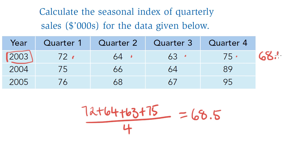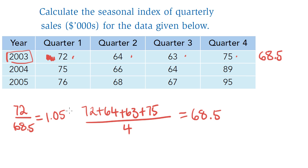Now I'm going to work out each sales figure as a proportion of the yearly average. So 72 divided by 68.5 — because 72 is greater than 68.5, these sales in quarter one were better than average, so my number is going to be 1-point-something. 72 divided by 68.5 gives me 1.051. That is the yearly proportion for quarter one.